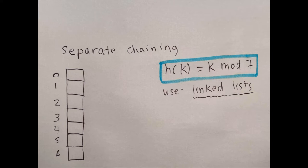The first type of collision resolution we're going to talk about is separate chaining. The idea of separate chaining is that you're allowing the collisions to occur. So instead of trying to find the next available cell for the key-value pair, you just create a linked list at that index when you encounter a collision.